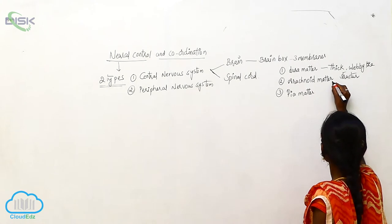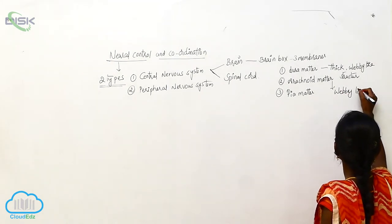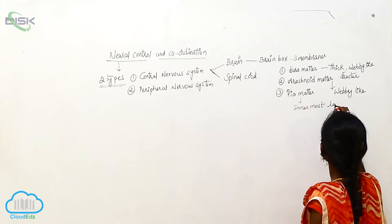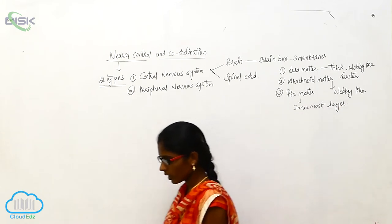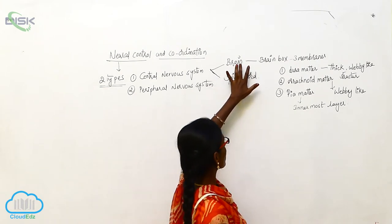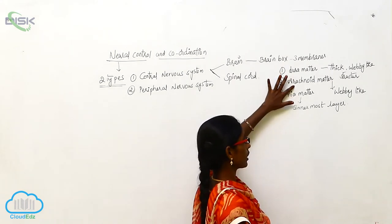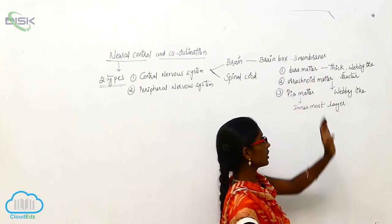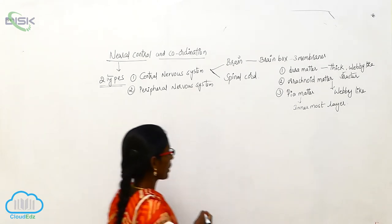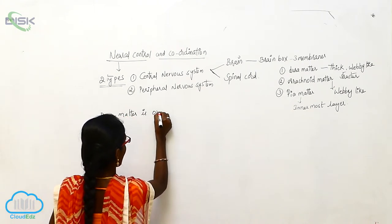The Arachnoid Matter is also a webby-like structure. The Piamater is the innermost layer. The Duramater is the outermost layer, and Arachnoid Matter is the middle layer.